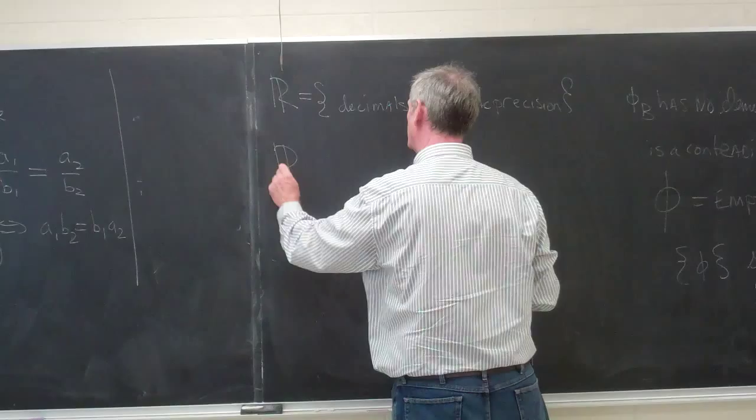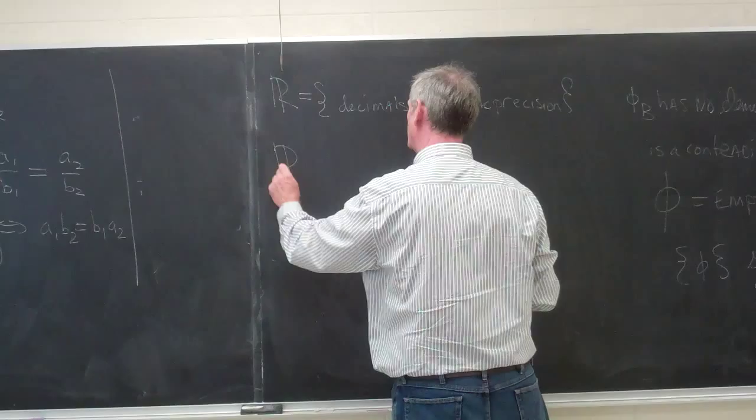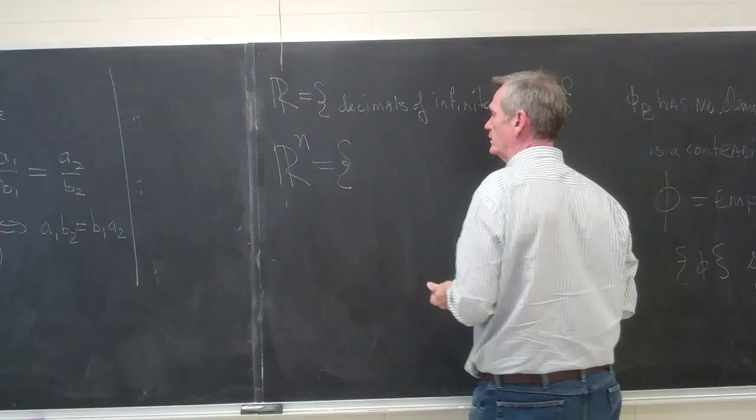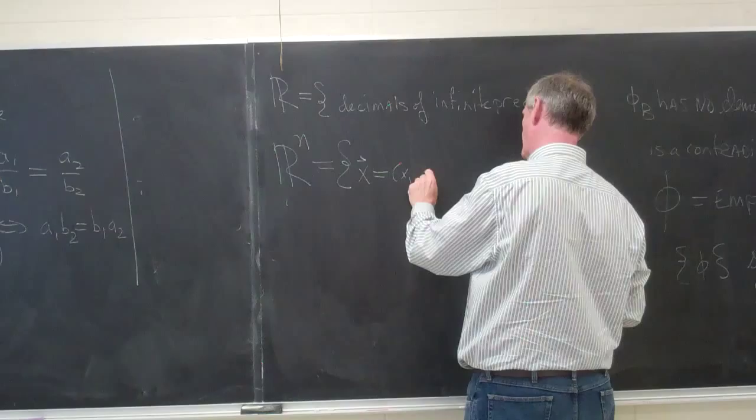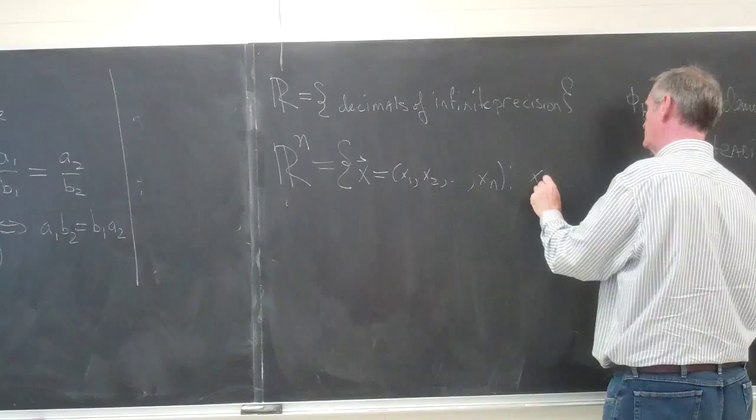If we have the real numbers, then we can also define the vector space Rn, which would be the set of all ordered n-tuples such that each of the elements is in the reals.